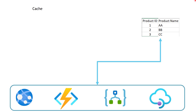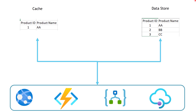Let's say we wanted to introduce cache into our system, and we managed to cache the data for product ID 1. We need communication between the cache instance and the application layer. When the application layer gets a request to retrieve information about product ID 1, it checks for the value in the cache first. If it finds the value, it retrieves it straight away. If it doesn't find the value, it gets it from the data store. This is how caching works.